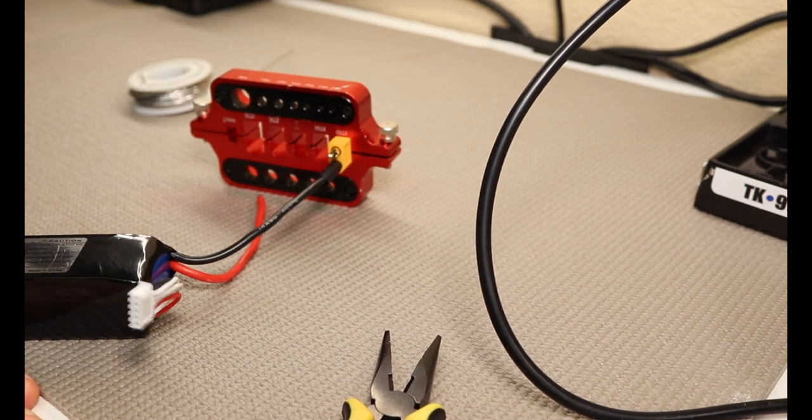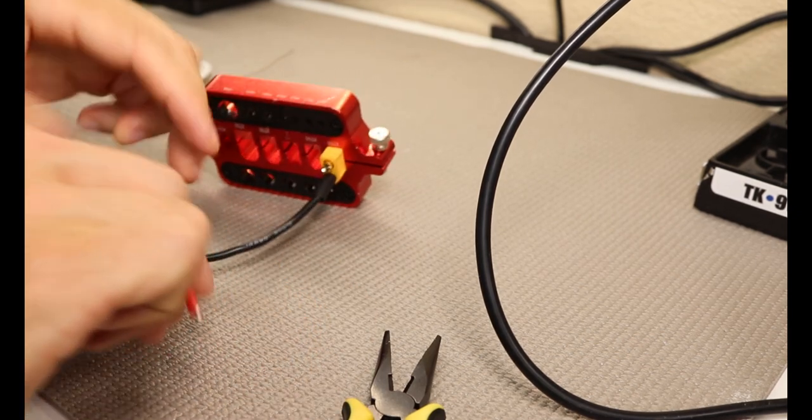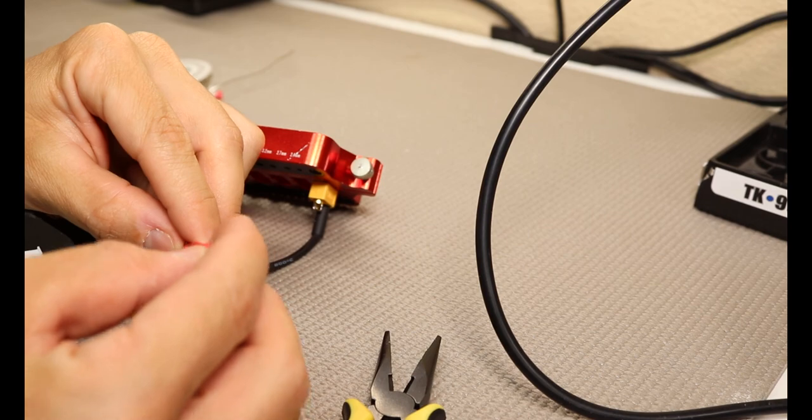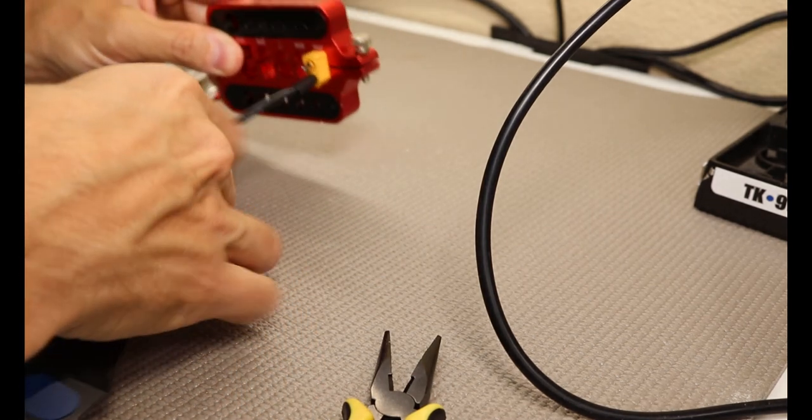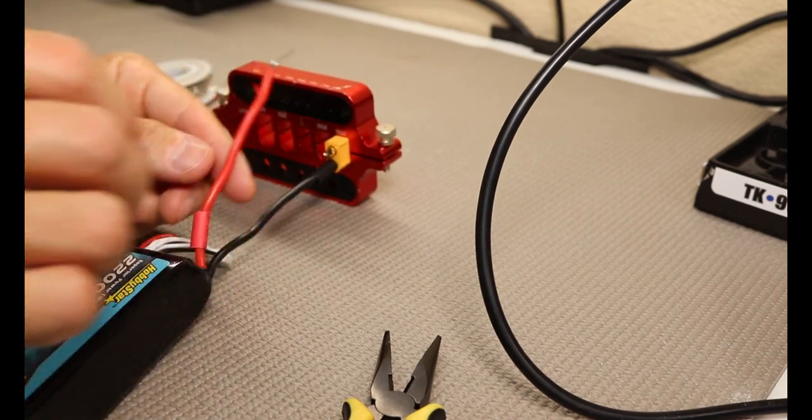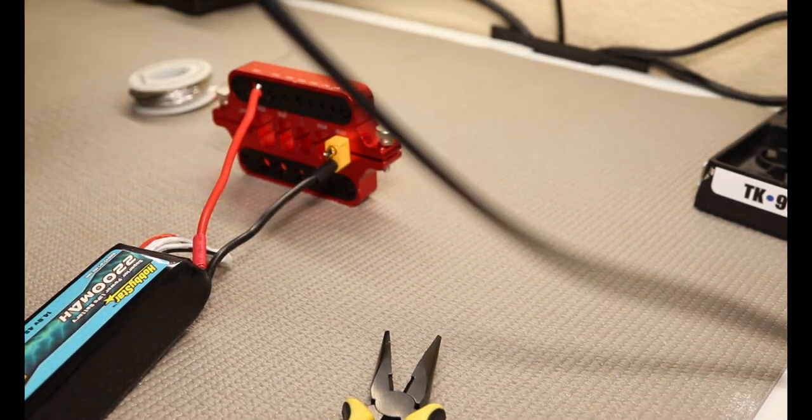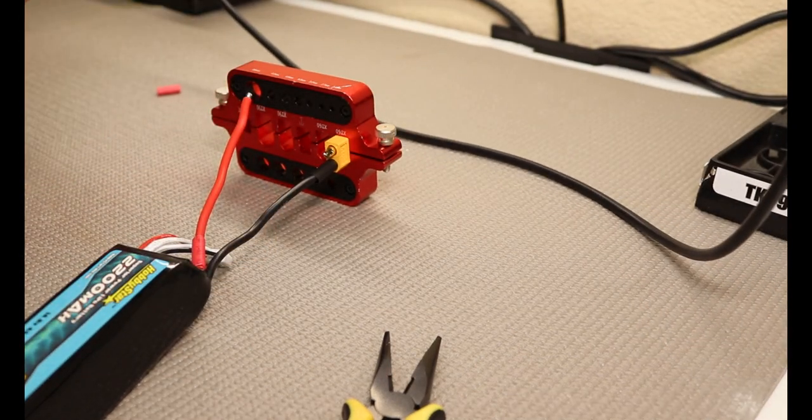Now we're going to take our positive battery lead, again put our heat shrink onto it, rotate this guy around. Sorry guys, trying to make sure this stays in line of sight of the camera.